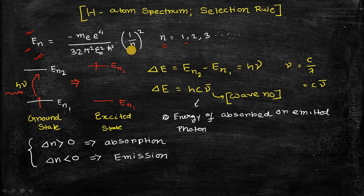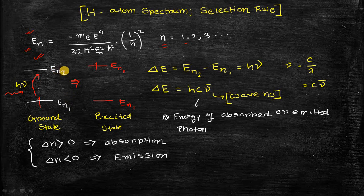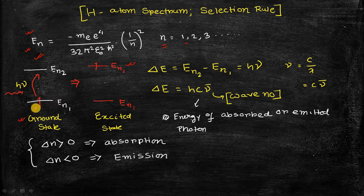As the principal quantum number increases, the energy will also increase. Since hydrogen is a single electron system, suppose the n1 state is populated with one electron and we supply some energy exactly equal to the energy gap between the En1 state and En2 state. The electron will absorb that energy and get excited into the n2 state — this phenomenon is called absorption. The lower energy state is called the ground state, and the higher energy state is called the excited state.